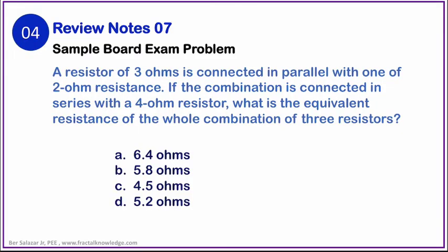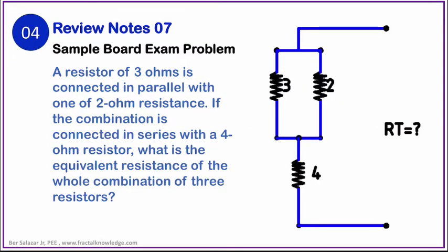Okay, let us continue solving problems. Our number four problem is a combination of series and parallel resistances. It reads like this: a resistor of 3 ohms is connected in parallel with one of 2 ohms resistance. If the combination is connected in series with a 4-ohm resistor, what is the equivalent resistance of the whole combination of three resistors? Based on your visualization of the problem, the circuit in your screen is the representation of the problem. 3 ohms is parallel with 2 ohms, and the combination is connected in series with 4 ohms. We need to find the total resistance of this circuit. Just by examining the figure, we have 4 ohms plus the parallel resistance is the total resistance.